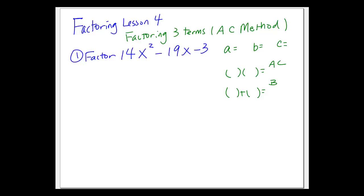This is the first example: factoring three terms using AC method. We look at this and it's already in AX squared plus BX plus C form. So we decide what A, B, and C are. A is the coefficient with X squared, so we have 14 for A. For B, we have negative 19 — don't forget the negative sign. And for C, we have negative 3, which also comes with a negative.